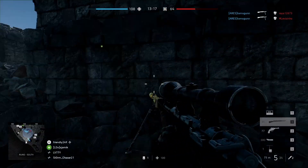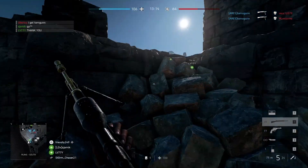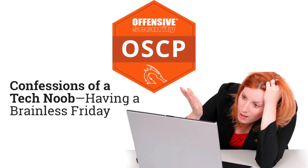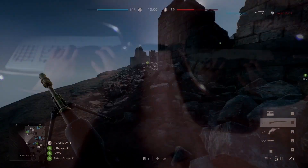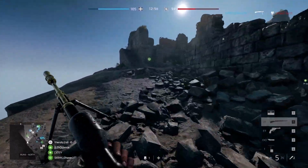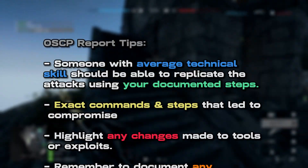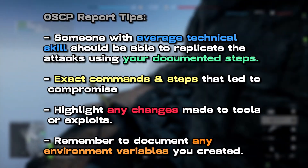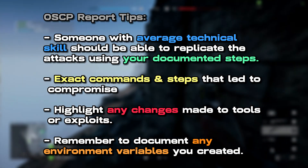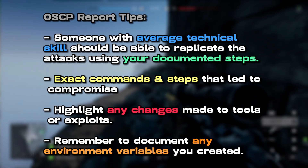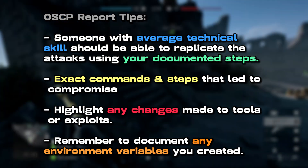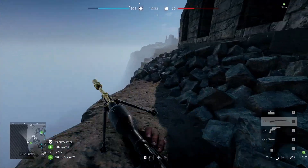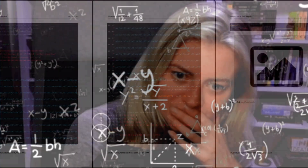Advice number two: make sure that all of the steps are incredibly reproducible. That's another guideline you have to follow. Someone who is semi-tech savvy needs to be able to reproduce all of the steps you took to exploit all of the same machines. That means properly showing what you did and how you did it. If there was source code you customized but didn't show in the report, that's not reproducible. If you created environment variables — like setting an IP address to a variable called 'target' — you have to show that as well.